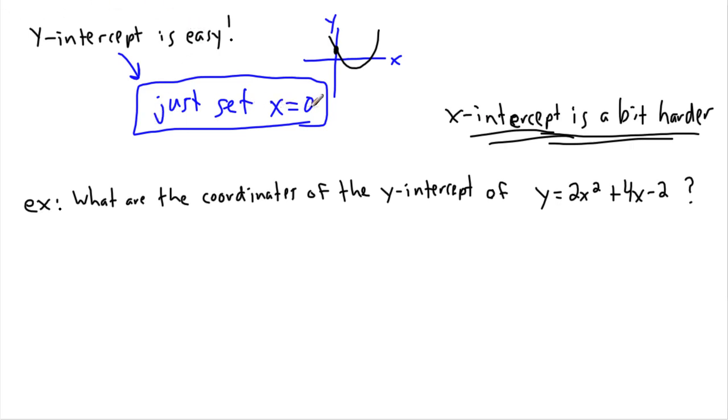For example, what are the coordinates of the y-intercept of this equation right here? I know it's quadratic because that's an x squared and nothing higher. This is quadratic, that means it's a parabola opening up or down. I know it opens upwards because this 2 is positive, so it's a happy parabola.